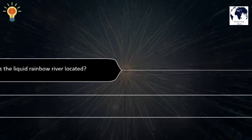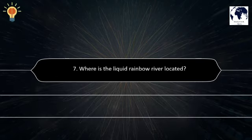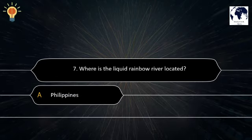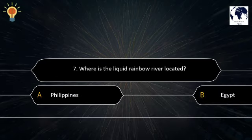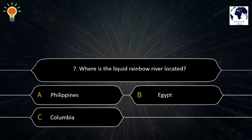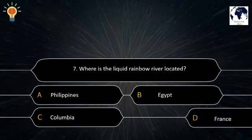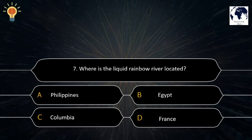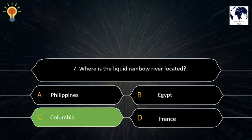Question number 7. Where is the liquid rainbow river located? Option A: Philippines. Option B: Egypt. Option C: Colombia. Option D: France. The correct answer is Option C — Colombia.